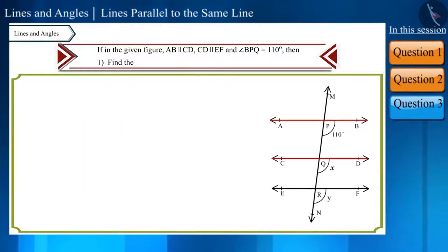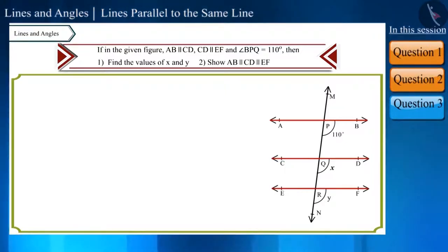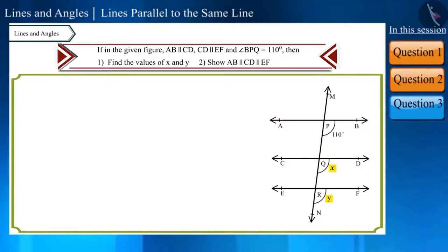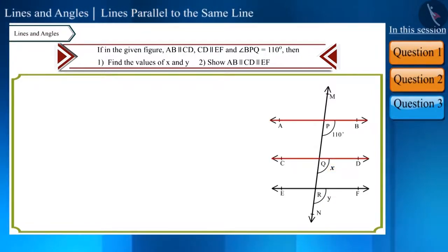Let's move to our next question. In the figure, line AB is parallel to line CD and line CD is parallel to line EF. If angle BPQ equals 110 degrees, then find the values of X and Y, and then show that line AB, line CD, and line EF are parallel to each other.